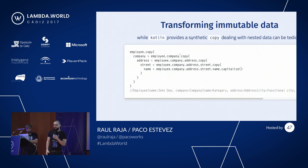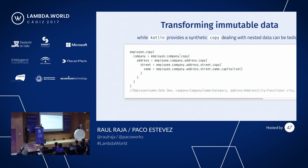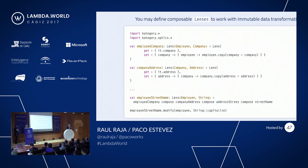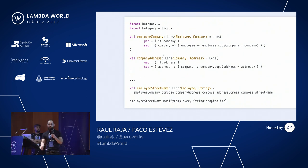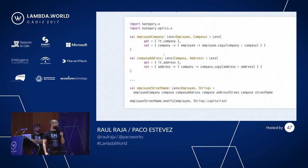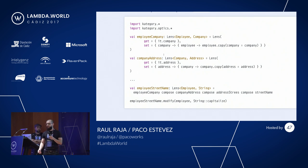Optics offer solutions for this. Optics are a way to deal with immutable data structures in an elegant way. We can create a Lens for an Employee that has a focus in the Company, and a Lens for a Company that has a focus in an Address. We do this by creating a Lens with a getter and a setter. For the Employee, to get the Company you just get the property, and for the set value, if you give me a new Company and an Employee, I can copy the Employee and give it the new Company property.